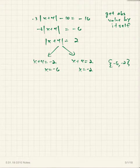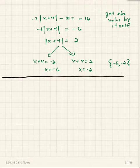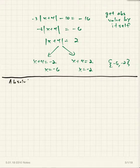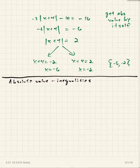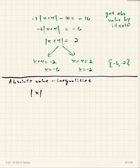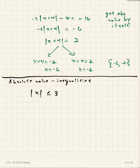That's a quick review of absolute value equations. Now let's go on to talking about absolute value inequalities — that means instead of an equal sign, we have an order symbol of some type.